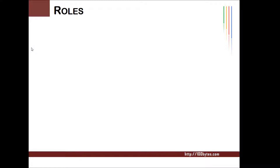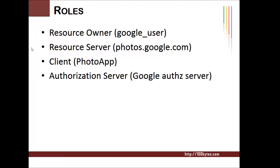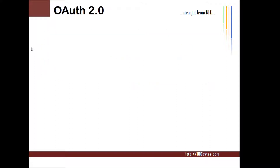In this scenario, the client app needs to access photos from photos.google.com for a particular user. Now let's look at the OAuth roles and how they fit this scenario. First is the resource owner — whoever owns the resources, in this case a Google user. Next is the resource server — the server that holds the actual protected resources, in our case photos.google.com. Next is the client — the one requesting access, which is our photo app. Finally, the authorization server issues authorization grants to the client.